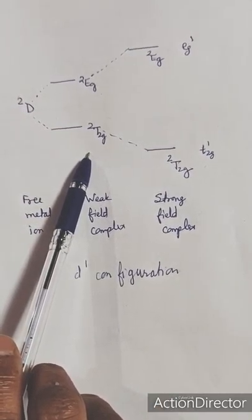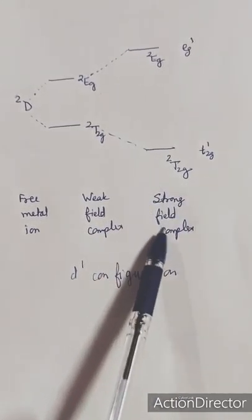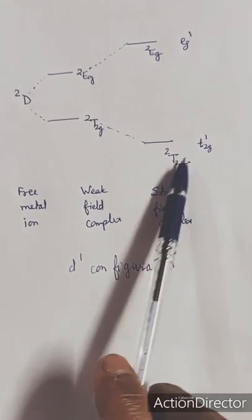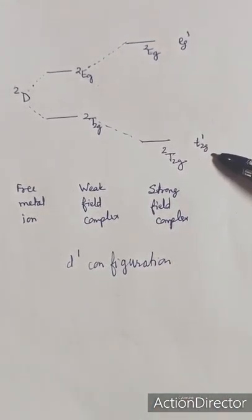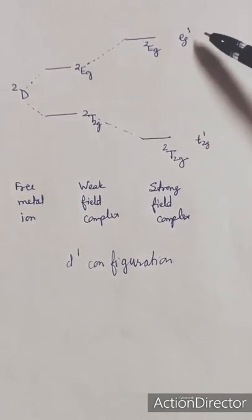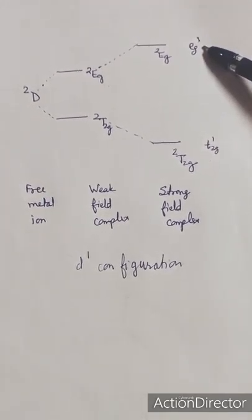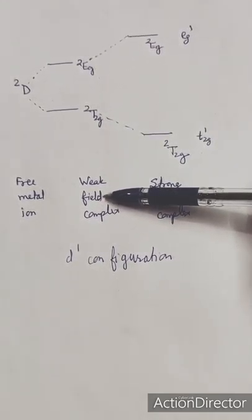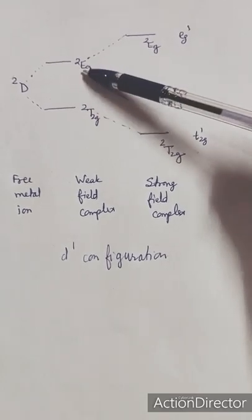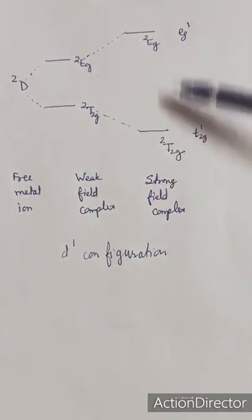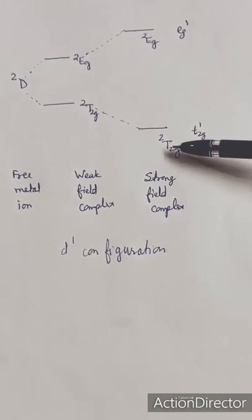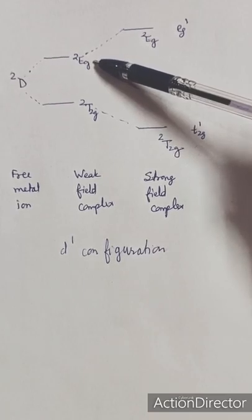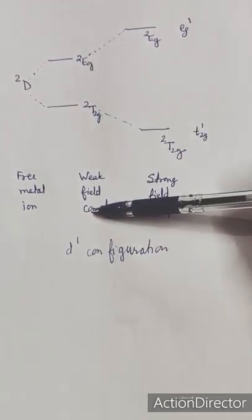After formation of an octahedral complex, the term splits into two Mulliken terms. This is the strong field complex and this is the weak field complex. In a strong field complex, t2g¹ is the ground state and eg¹ is the excited state. The energy gap between t2g and eg is higher in a strong field complex compared to a weak field complex.